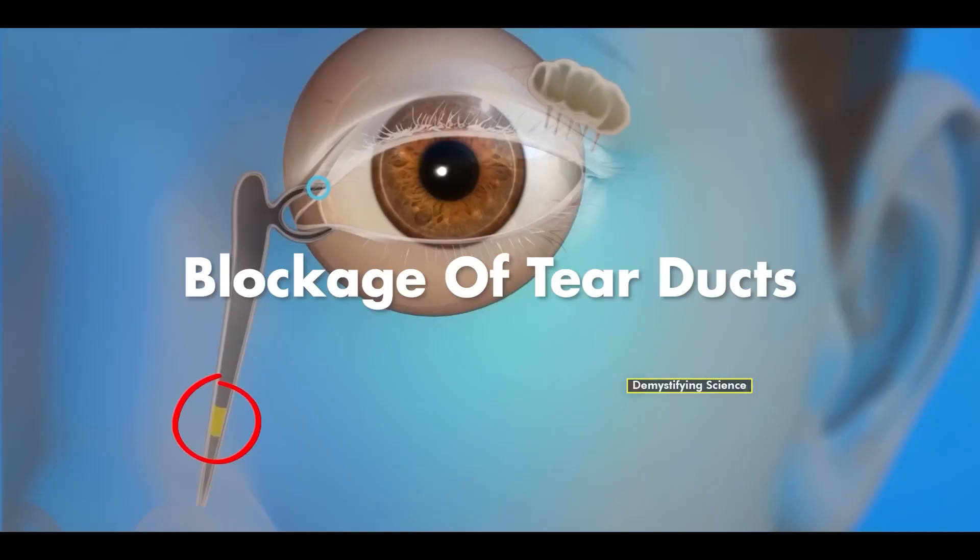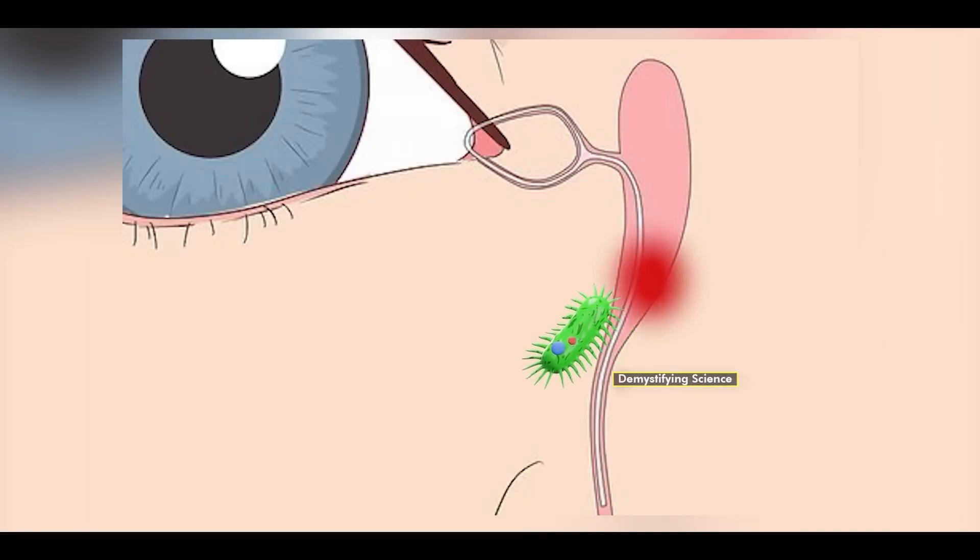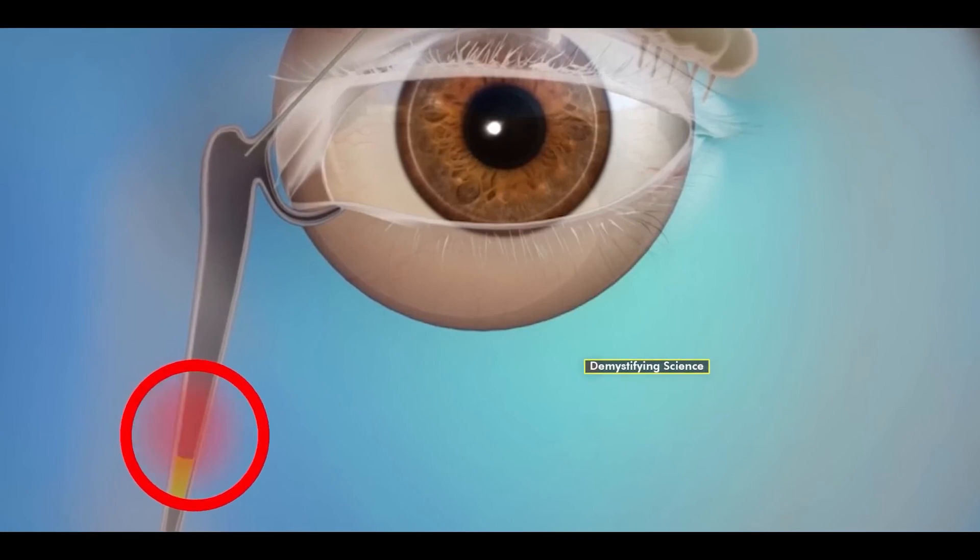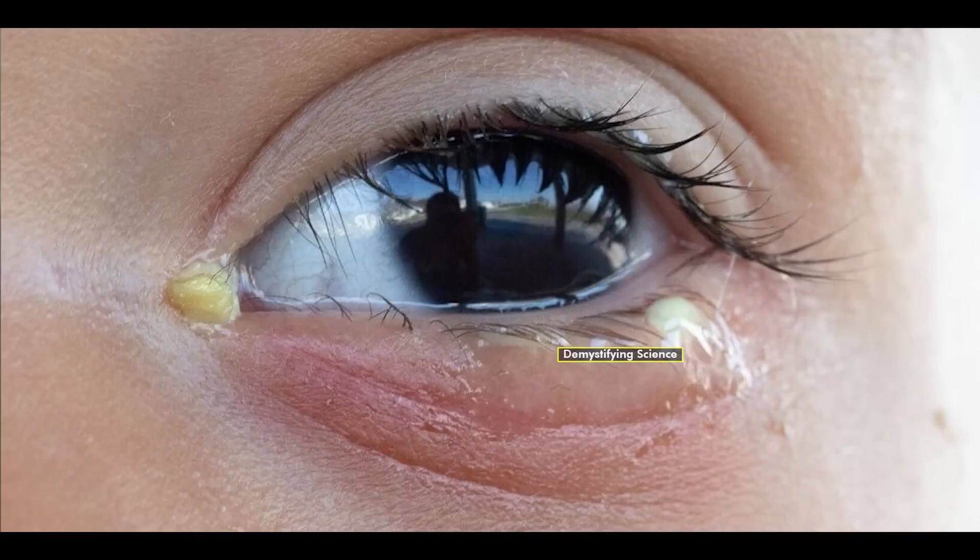Infections in the tear ducts caused by bacteria can lead to blockages and inflammation, resulting in increased eye discharge, which contributes to the formation of eye boogers.